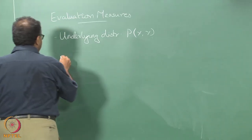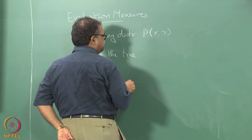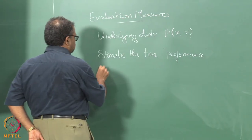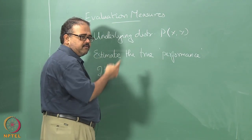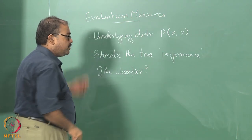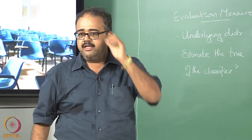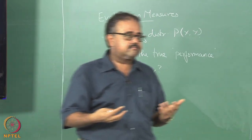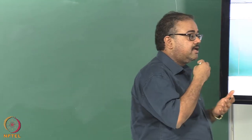Having said that, how do I estimate the true performance of the classifier? I have given you some sample data drawn from p(x,y). That is all the information I have, and I can use some of that data for training. I find the parameters — now how do I find out how good these parameters are? There are two questions to ask.